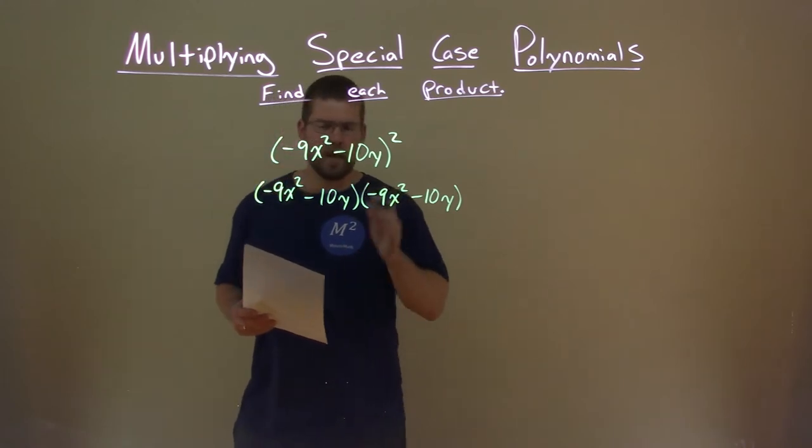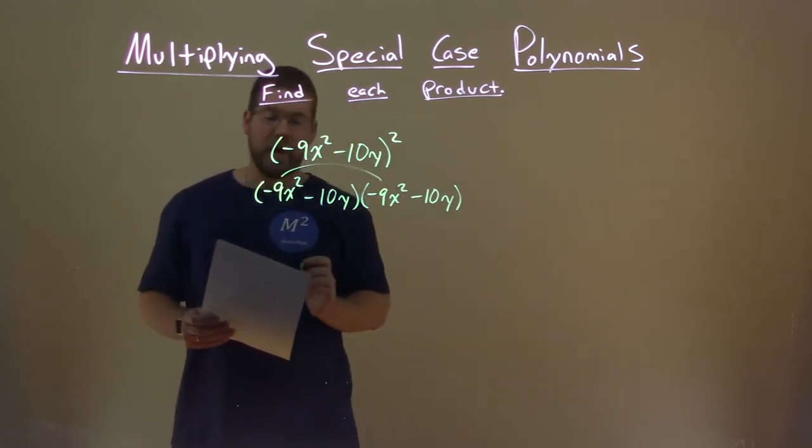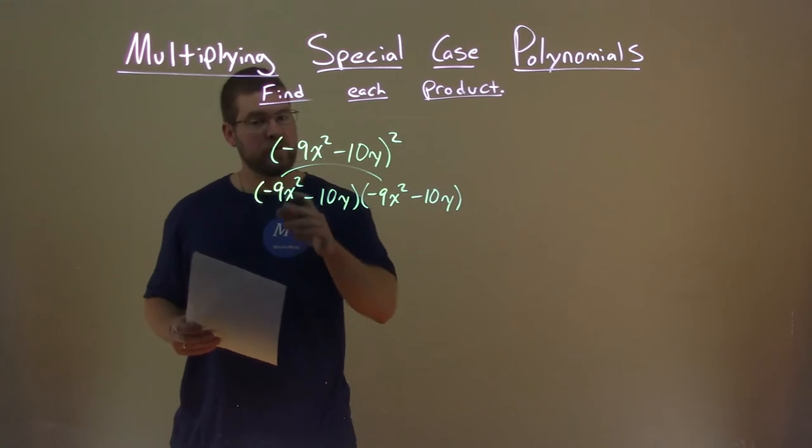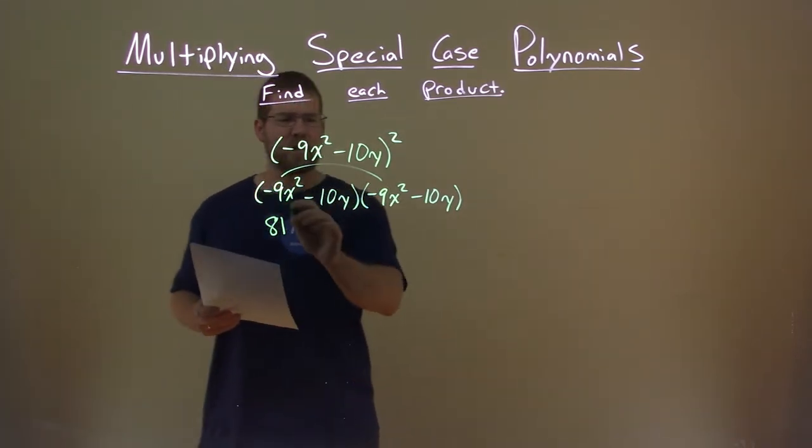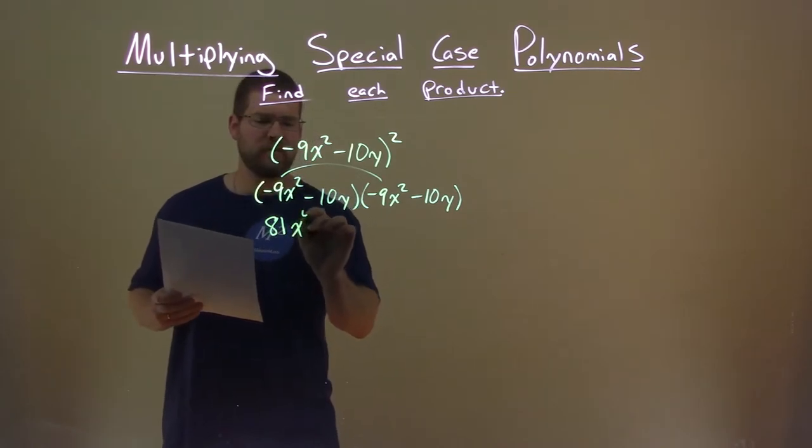Alright, negative 9x squared times a negative 9x squared becomes a positive. 9 times 9 is 81. x squared times x squared is x to the fourth power.